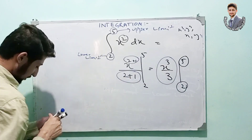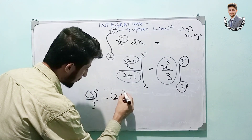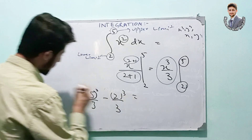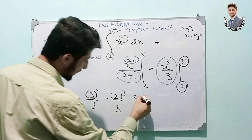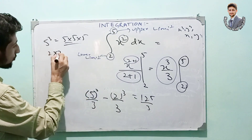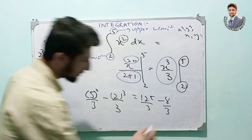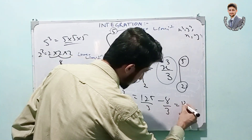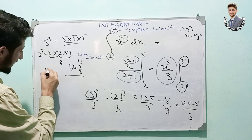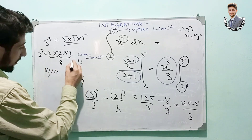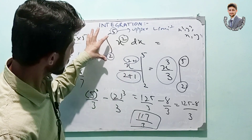So substituting: x³/3 evaluated from 2 to 5 gives us 5³/3 minus 2³/3. Now 5³ means 5 × 5 × 5, which equals 125, so we have 125/3. And 2³ means 2 × 2 × 2, which equals 8, so we have 8/3. Taking the LCM, which is 3: 125 minus 8 equals 117. So our final answer is 117/3. This is our answer after integrating x² in a closed interval from 2 to 5.